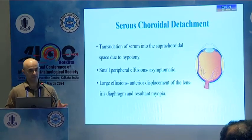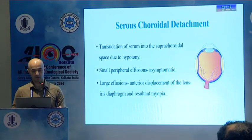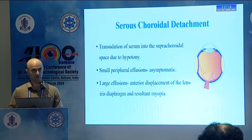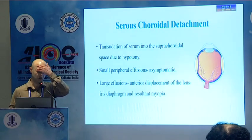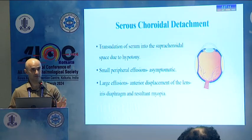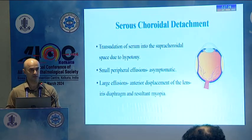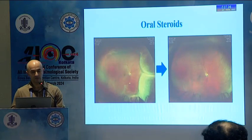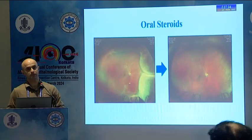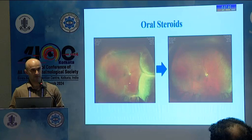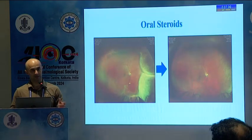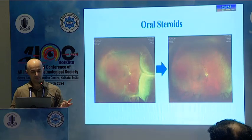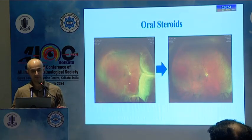We have serous and hemorrhagic choroidal detachment. In serous choroidal detachment, there is transudation of serum into the supra-choroidal space due to hypotony. Small peripheral effusions are usually asymptomatic, but larger ones require treatment. The best treatment for these conditions is oral steroids, and wide-field fundus cameras are now extremely useful for monitoring the progress of these patients.